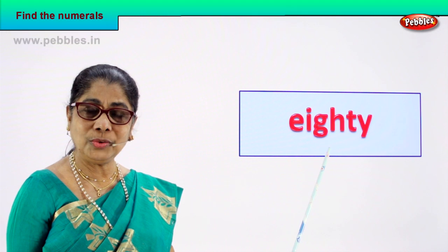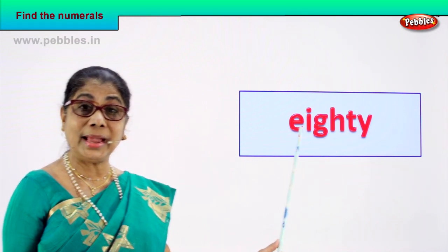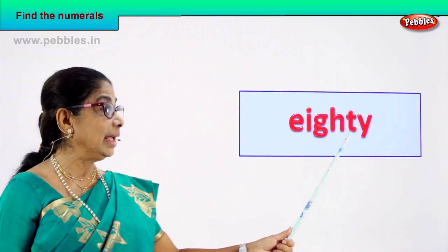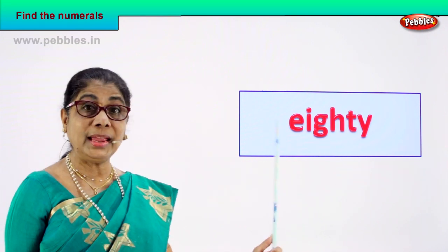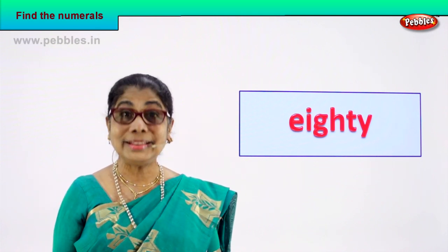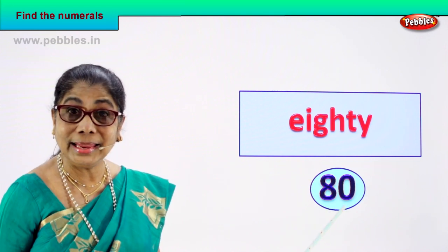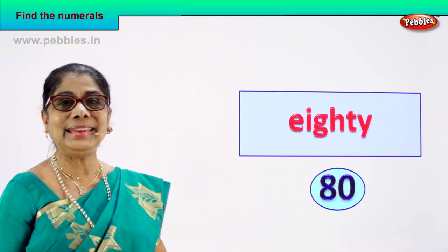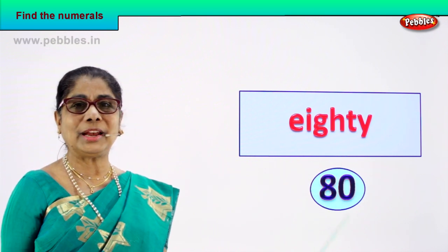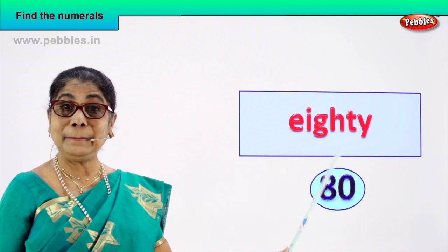Read aloud: E-I-G-H-T-Y, 80. How do we write the numeral? Eight and zero — 80. Very good. So we learn to write the numeral for the number name. Shall we take another number name?